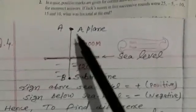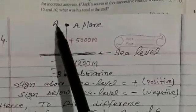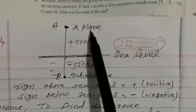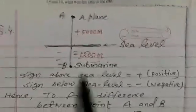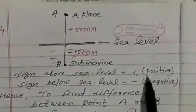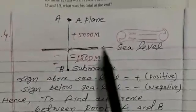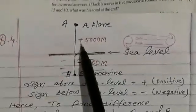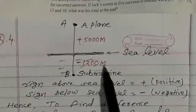In this question, you find the difference between point A to point B. Let point A shows the position of a plane and point B shows the position of submarine. You know, sign above sea level is positive and sign below sea level is negative. So you write here, plus 5,000 meters and you write here, minus 1,200 meters.